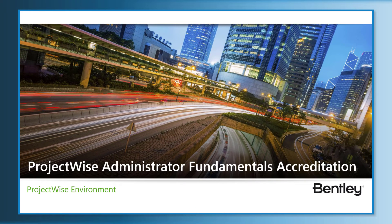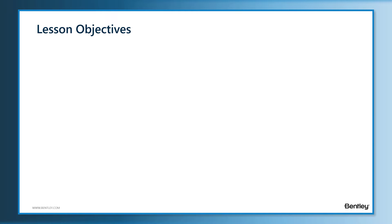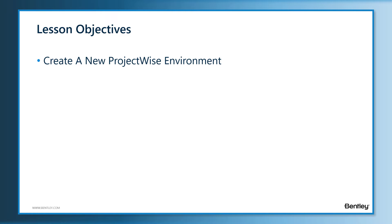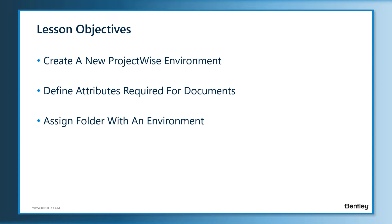Hello and welcome to ProjectWise Administrator Fundamentals Accreditation Course — ProjectWise Environment. In the previous lesson, we saw how documents can be created with a special naming convention, how attributes can be assigned to documents, and how title blocks can be updated from document attributes. It is all possible because there is an environment assigned to documents. In this lesson, we will learn how to create a ProjectWise environment with the relevant attributes and how to assign the environment to a folder so that documents within will be able to make use of those environment attributes.